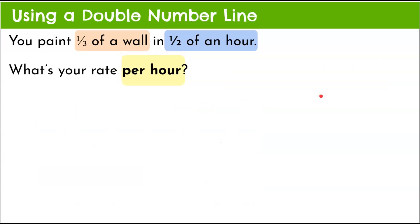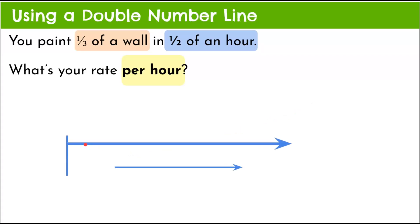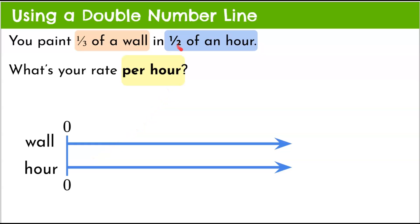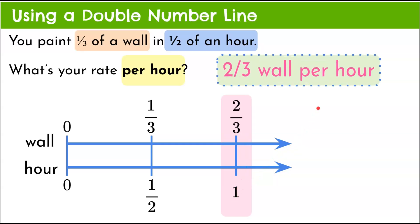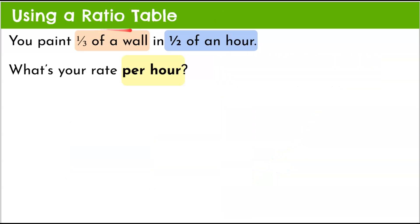We can also use the double number line. We have wall on top and hour on the bottom. Starting with one-third of the wall in half an hour, we go to one full hour. We increased by one-half to get to one, so another one-third gets painted in the next half hour. One-third plus one-third is two-thirds — giving a unit rate of two-thirds of a wall per hour.